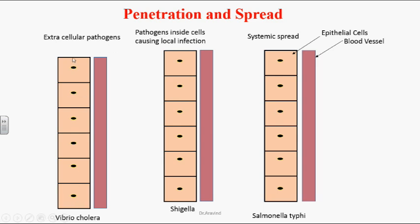Some bacteria always stay as extracellular pathogens — the best example is Vibrio cholerae. In the first picture, the bacteria enter the human body and attach to the epithelium but don't enter into the cells; they are not invasive. They stay on the surface of the epithelial cell and secrete exotoxins to damage cells from outside. Vibrio cholerae attaches to the human GI tract epithelium, releases a cholera toxin, and that toxin stimulates the epithelial cell to secrete a lot of fluid into the lumen, causing diarrhea — rice-water stools.